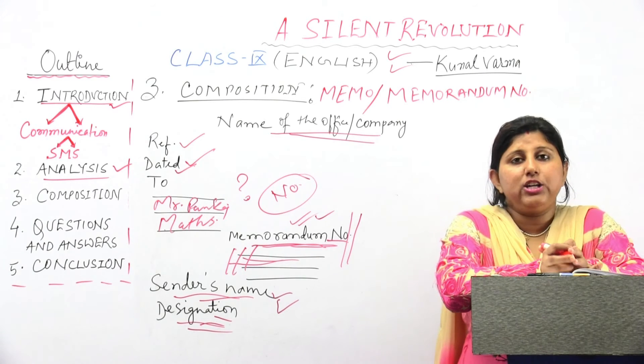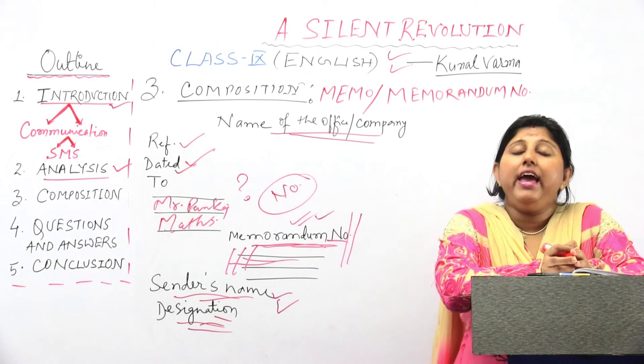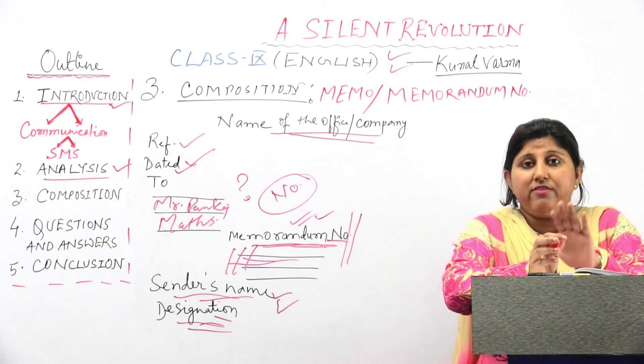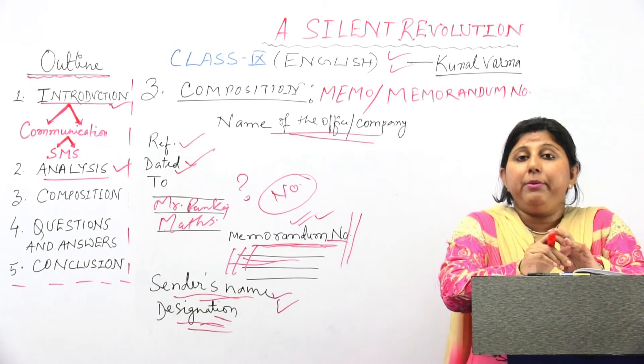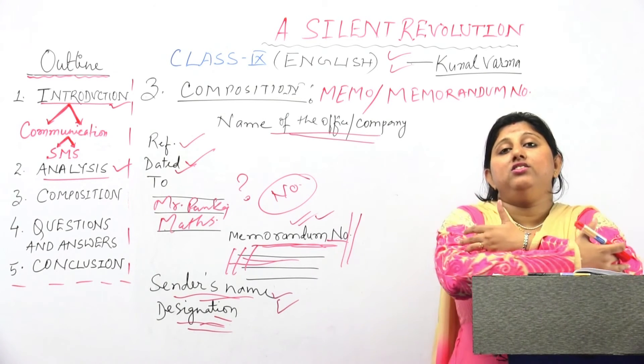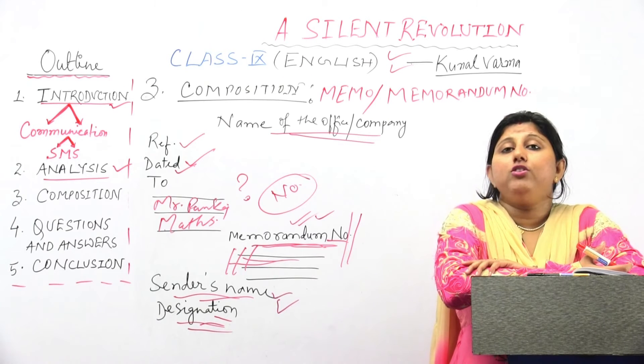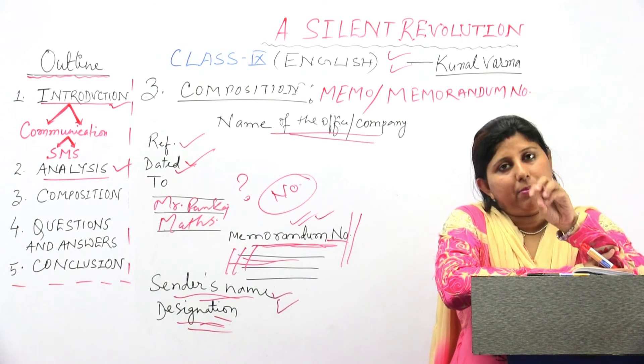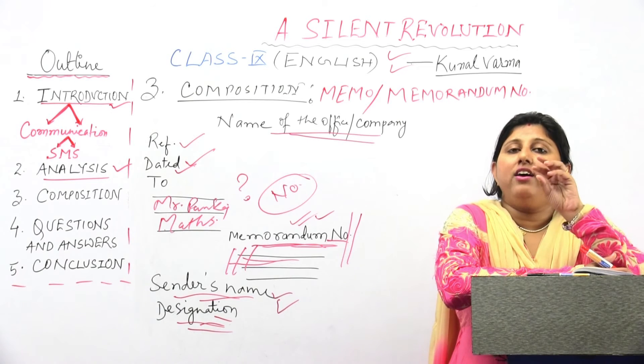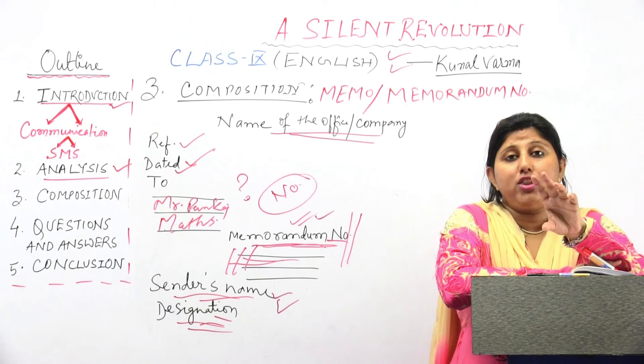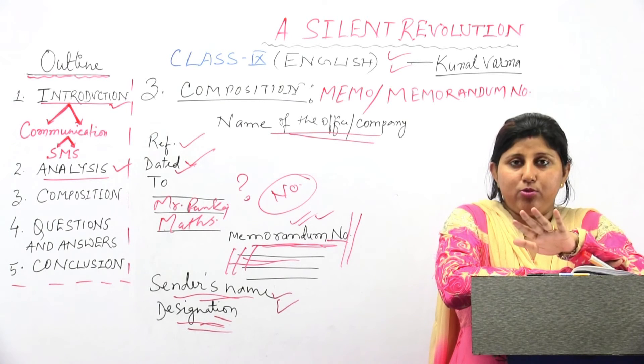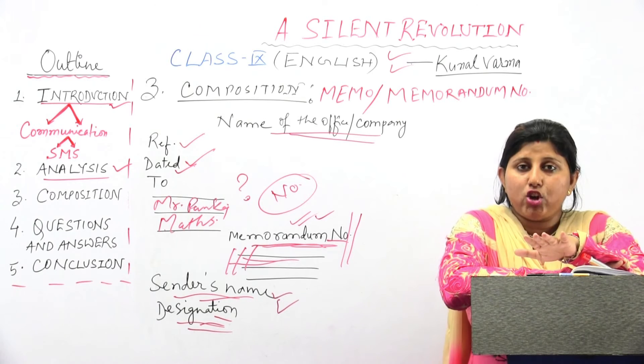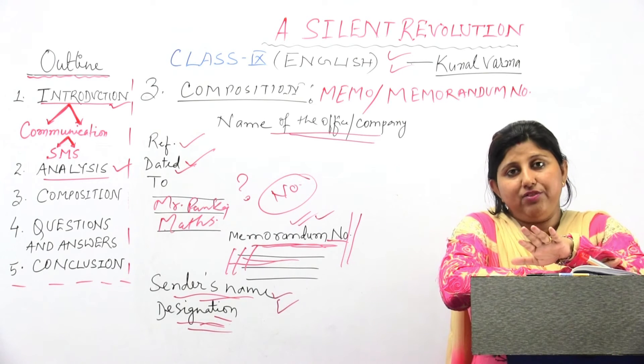In group discussion, there is a particular topic. People are divided in two groups and they are sitting around the table. What do you have to do? You have to speak on a particular topic, whether you are agree or you are for the motion, or you are against the motion. If you are agreeing with the topic or disagreeing with the topic.